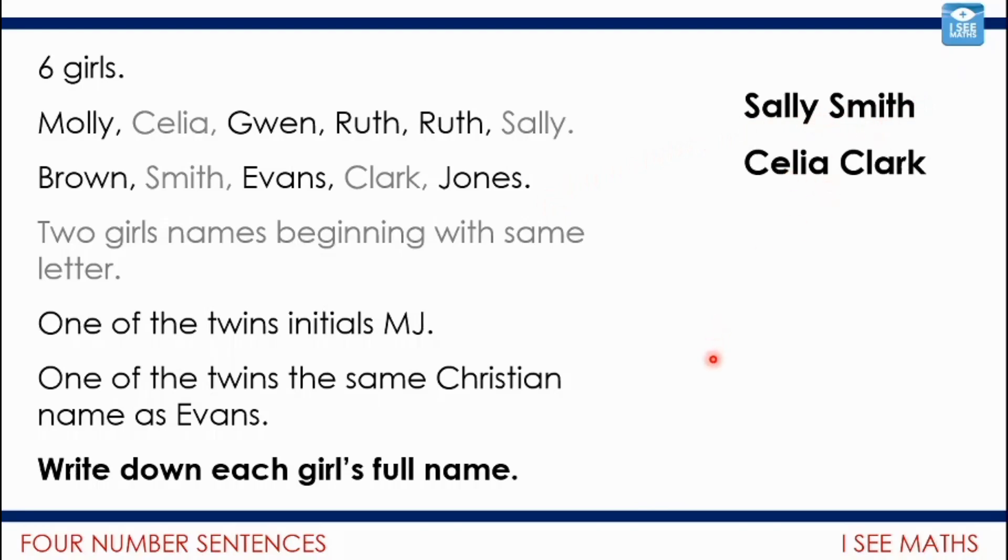And then the next thing I would look at is this. There is another Jones. So it says one of the twins initials is MJ, the same as our patrol leader. So the only surname that must be belonging to the twins, and the twins must have the same surname, it's Jones. There's another Jones. And so one of the twins must be Molly Jones.